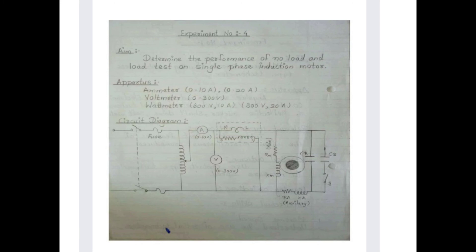The aim of experiment number 4 is to determine the performance of no-load and load tests on a single-phase induction motor. The apparatus required are: an ammeter (0 to 10 ampere and 0 to 20 ampere), a voltmeter (0 to 300 volt), and a wattmeter (300 volt, 10 ampere and 300 volt, 20 ampere). Please refer to the circuit diagram shown.